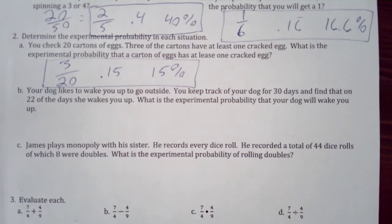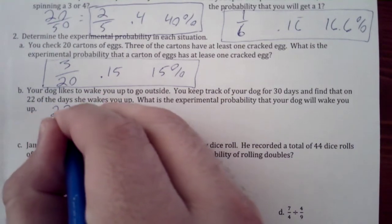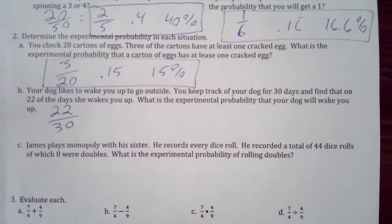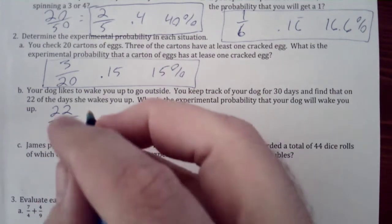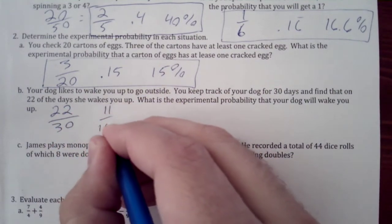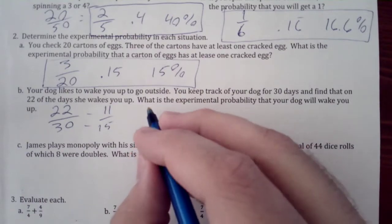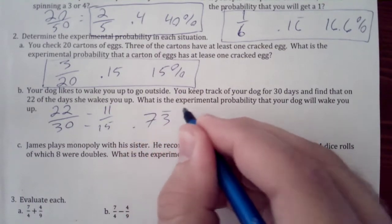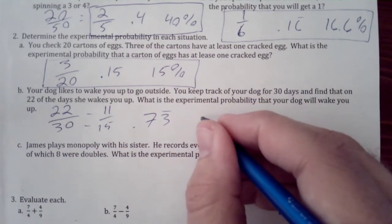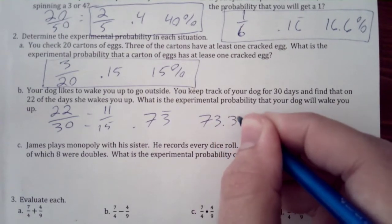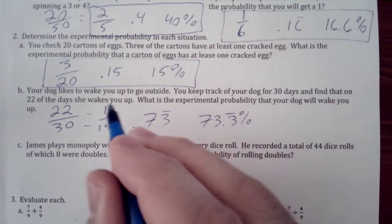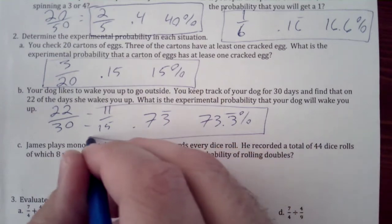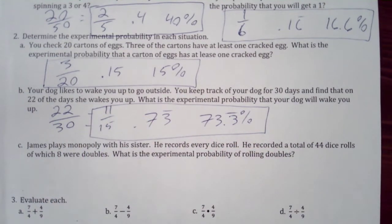So we have 22 over 30, which reduces down to 11 over 15. So we have 0.73 repeating or 73.3%. So any one of those would work as possible solutions for this problem.